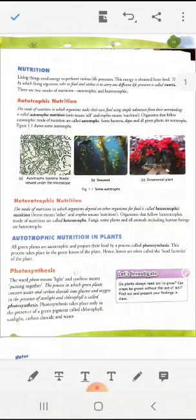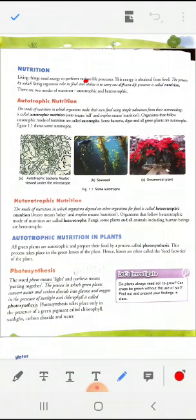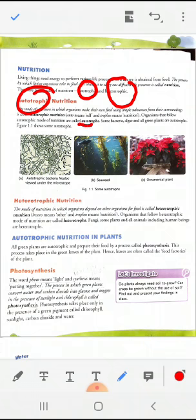There are two modes of nutrition. Nutrition can be divided into two parts: first is autotrophic, second is heterotrophic. Autotrophic nutrition is the mode in which organisms make their own food using simple substances from their surroundings. Auto means self and troph means nutrition. Those plants that make their own food by themselves, this process is called autotrophic nutrition.